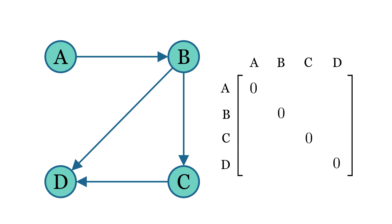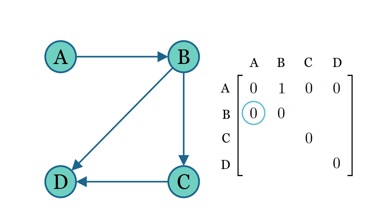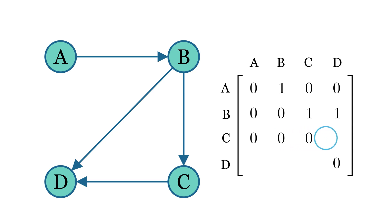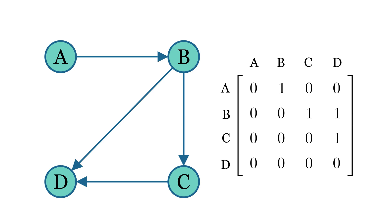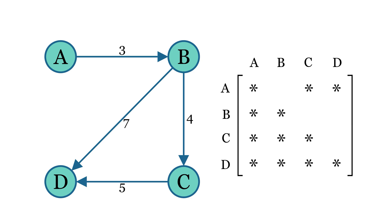All the diagonal elements will be 0 because there are no self-loops. When filling the cells in a directed graph, we check if there is a directed edge from the row node to the column node — if there is, we mark it with a 1, otherwise it stays 0. Notice how the matrix is not symmetrical along the diagonal in a directed graph, because the edges have a specific direction. If the graph contains weights, we use a different symbol to represent the absence of an edge — in our case, let's use an asterisk. To represent the edges, we simply replace the ones with the corresponding weights of those edges.